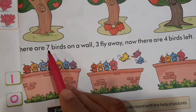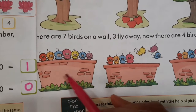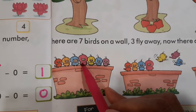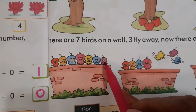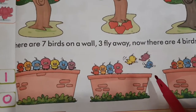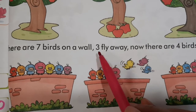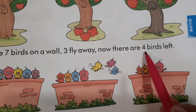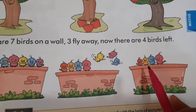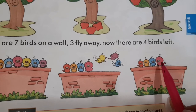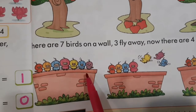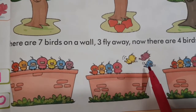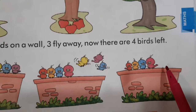Vais se hum dousra example dhekhte hai. There are seven birds on a wall. Yeh jho wall hai, uske oopar kitnay birds hai? Seven birds hai. Us meh se three birds fly away. Three fly away. Now there are four birds left. Kitnay birds thay yaha pae wall pae? Seven. Us meh se three birds fly away, so now there are four birds left.